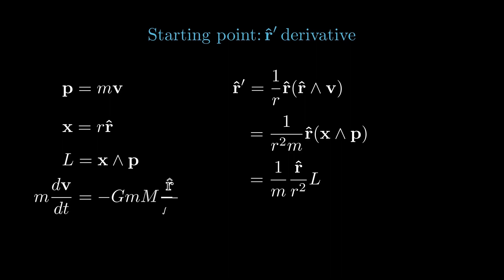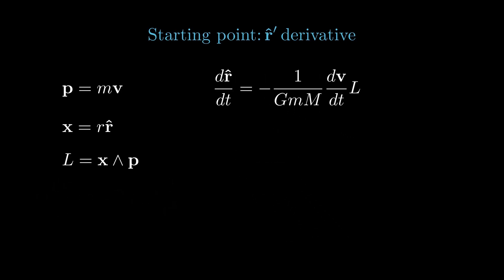Now we'll write Newton's gravitational law as mdv dt equals minus gmm times r hat over r squared. We can solve this for r hat over r squared and substitute in, finding r hat prime equals minus one over gmm times dv dt times l.